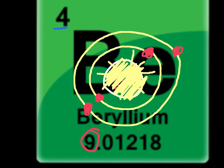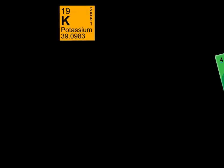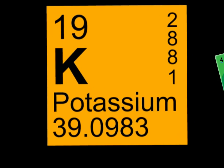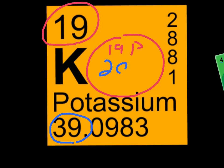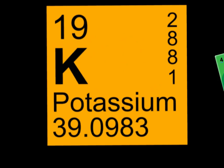Moving on to potassium. First off, we're going to take a look at what's inside the nucleus. We're going to have 19 protons because of this number right here. Then you take 39 minus 19 — that's 20 — so there's 20 neutrons inside. For now we're just going to make this dot represent our nucleus in our diagram.